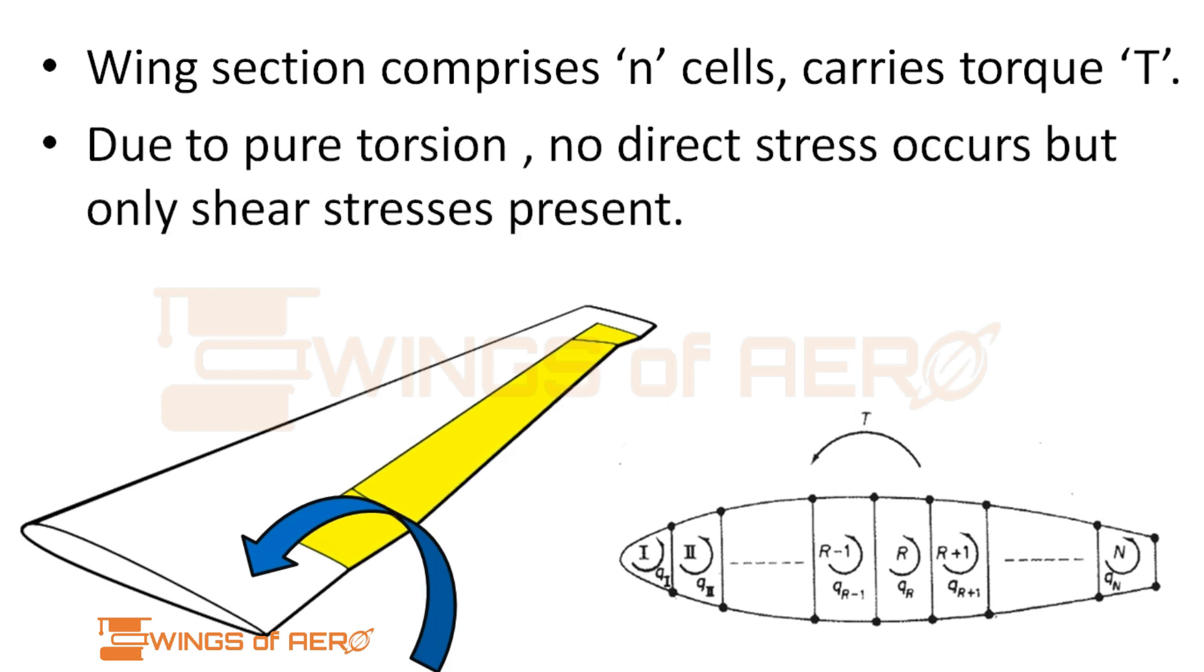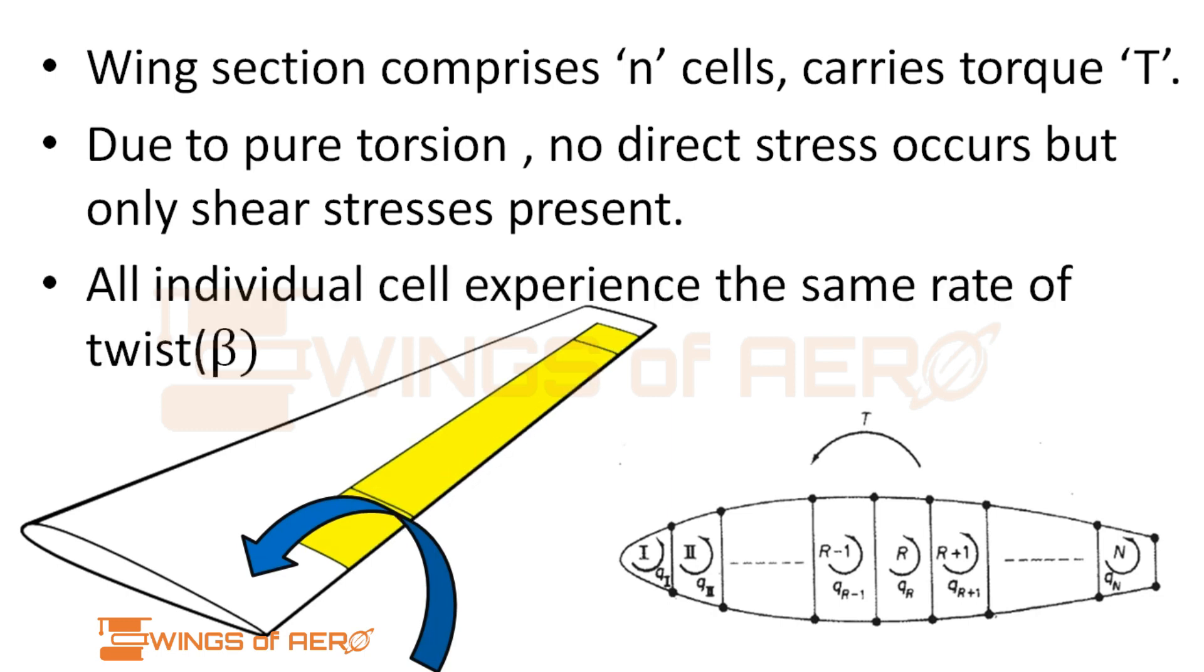Due to pure torsion, no direct stress occurs but only shear stress occurs on the skin. Due to this, all individual cells experience the same amount of rate of twist, that is beta. The beta will be same throughout the cell.